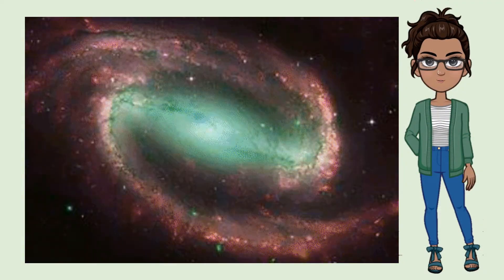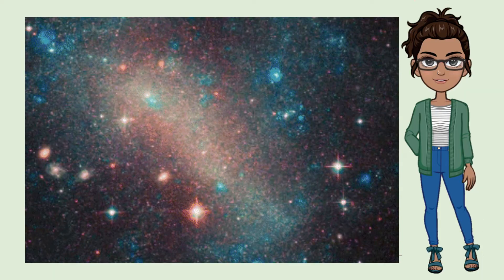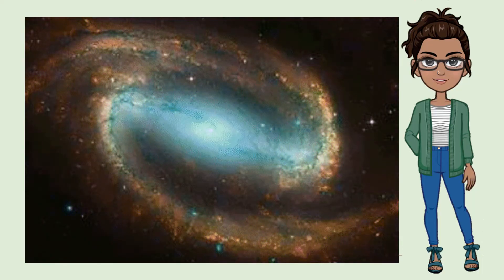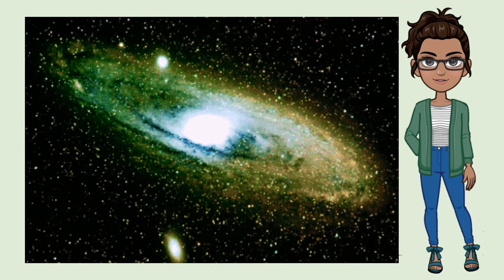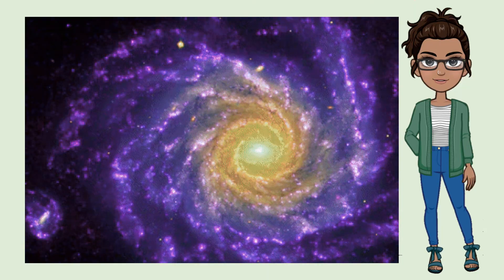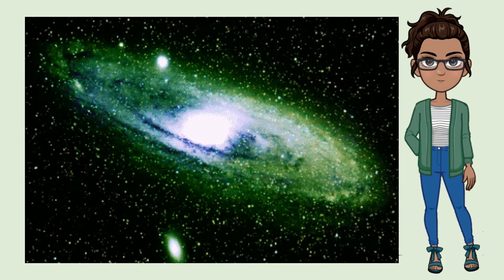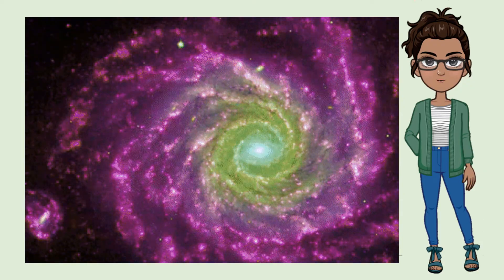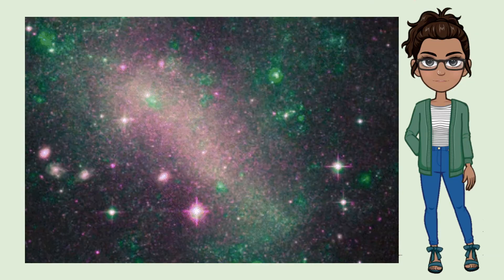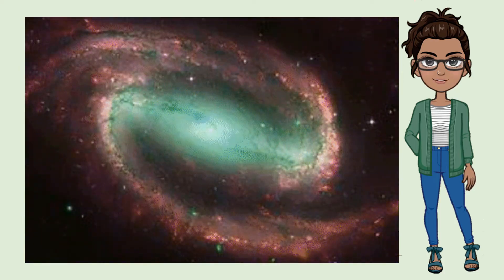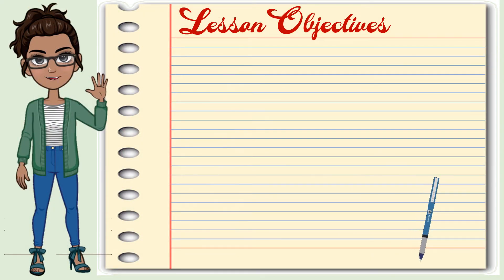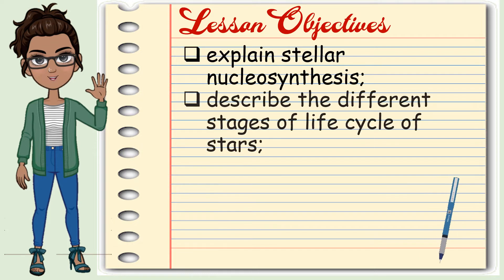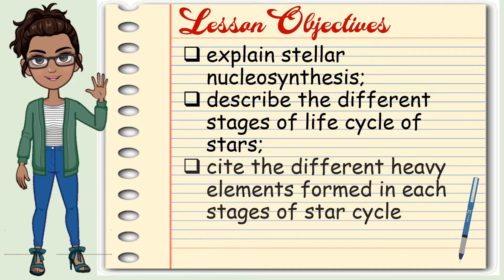Before the planet we live in right now came to existence, as did all other planets, solar systems, and galaxies, the earliest elements were formed first. Let us explore why the elements needed to exist first. All matter that makes up most of the universe — including us — is made up of elements. These elements are what we study in the periodic table, such as hydrogen, oxygen, and gold. We need to understand the foundations and formations of elements. This lesson primarily focuses on the formation of the heavier elements. At the end of this lesson, you should be able to explain stellar nucleosynthesis, describe the different stages of the life cycle of stars, and cite the different heavy elements formed in each stage of the star cycle.